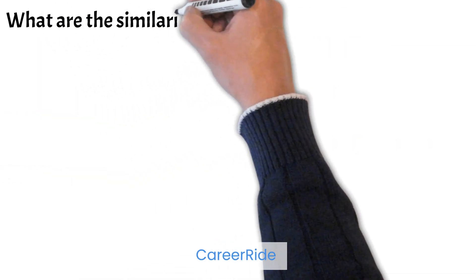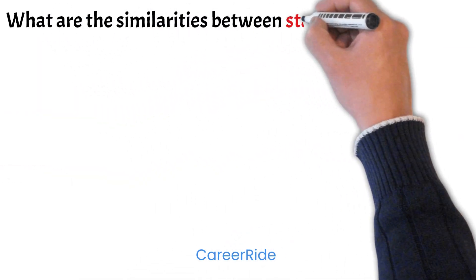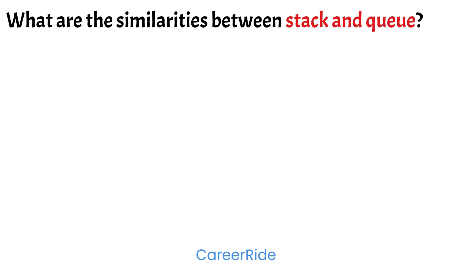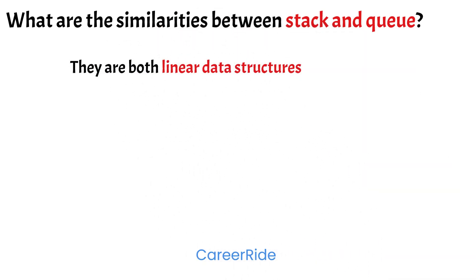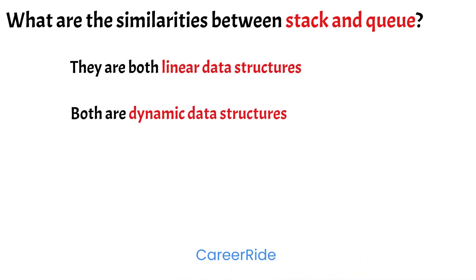Now the next question is: what are the similarities between stack and queue? There are two similarities. Both are linear data structures, meaning they are arranged in a sequential manner and every element is connected to its previous and next element. Both stack and queue are also dynamic data structures.